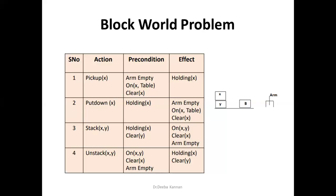The unstack function removes X from the top of Y. Preconditions: X must be placed on top of Y, the top of X must be clear, and the arm head must be empty. After-effects: the arm head will be holding X, and Y will be clear since the block has been removed from it. Each action must have all preconditions and effects defined.